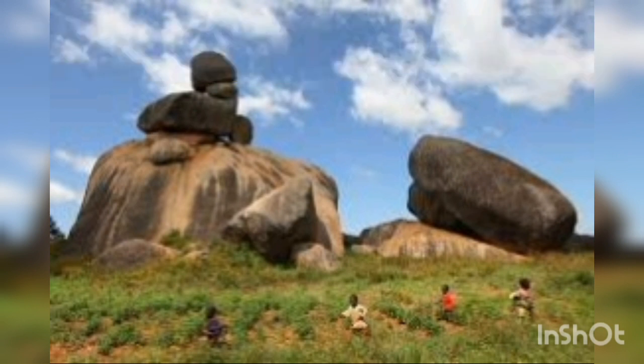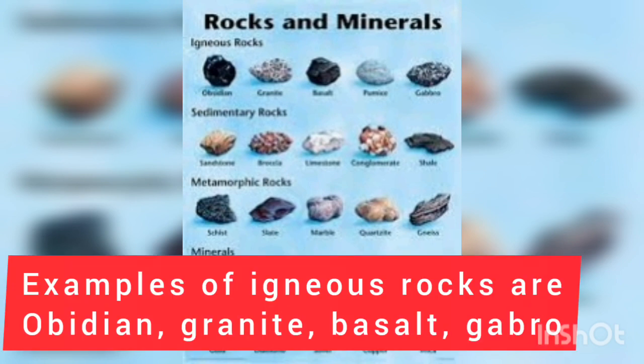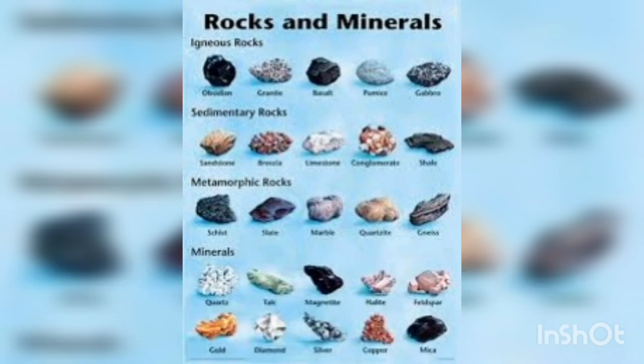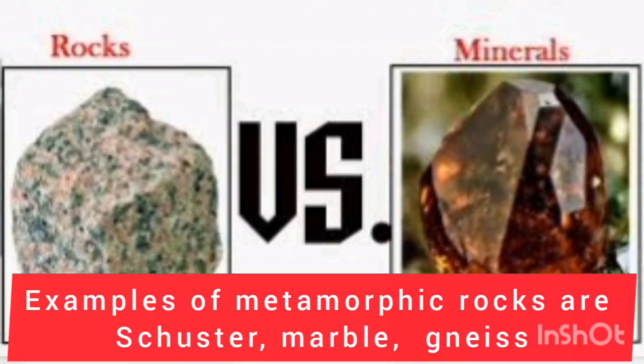Now let's go further to learn about the types of rocks. There are three types of rocks, and they come in many different forms with different properties. Igneous rocks differ in property from sedimentary and metamorphic rocks. Some examples of igneous rocks are obsidian, granite, basalt, and gabbro. Examples of sedimentary rocks are sandstone, limestone, conglomerate, and shale. Examples of metamorphic rocks are schist, marble, and gneiss.